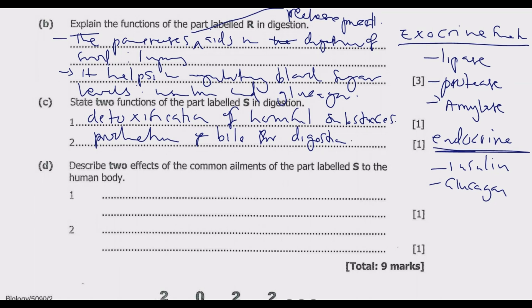Question D asks you to describe two effects of common ailments of the part labeled S on the human body. S is the liver. Among the key functions of the liver is production of bile, which is critical for digestion. So when the liver is not in good condition, you are going to experience poor bile formation or production — and bile is very critical for the body to digest food properly.